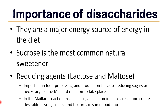Lactose and maltose are important in the food processing industry because reducing sugars are necessary for the Maillard reaction to take place. In the Maillard reaction, reducing sugars and amino acids react and create desirable flavors, colors, and textures in some food products.